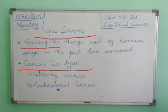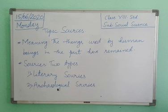History is a systematic study of the past. History is written on the basis of sources. Hence, there is no source, no history. Historians collect the sources, then do critical examination, analysis, and then write the history.